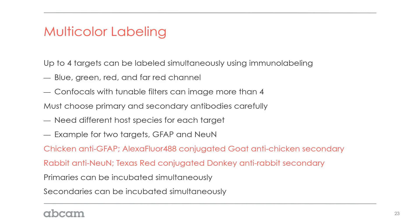You must choose your primary and secondary antibodies carefully — you need different host species for each target. For example, with two targets, GFAP and NeuN, we use a chicken anti-GFAP with an Alexa Fluor 488-conjugated goat anti-chicken secondary, and then rabbit anti-NeuN with a Texas Red-conjugated donkey anti-rabbit secondary. Primaries can be incubated simultaneously, and secondaries can also be incubated simultaneously, so we're not going from two steps to eight steps even when using four targets, as long as we choose our labeling very wisely.